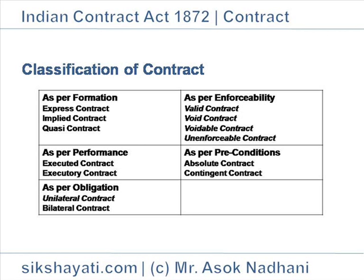As per Obligation. As per obligation for performance, a contract may be classified as Unilateral Contract — one party has performed his obligation while the other party has yet to perform — or Bilateral Contract — both parties are yet to fulfill their obligations.